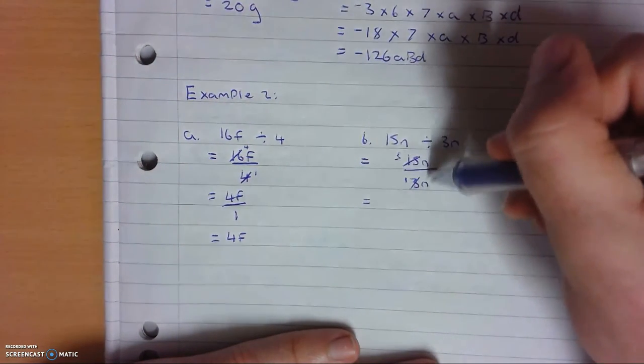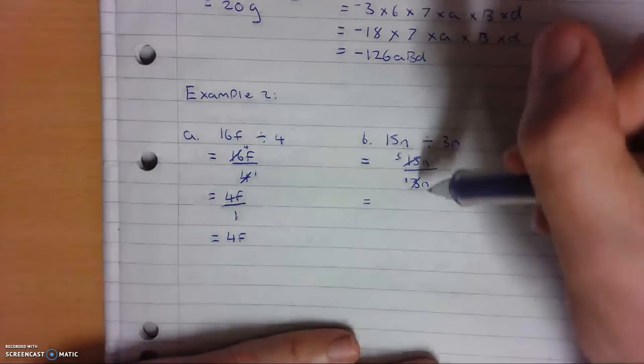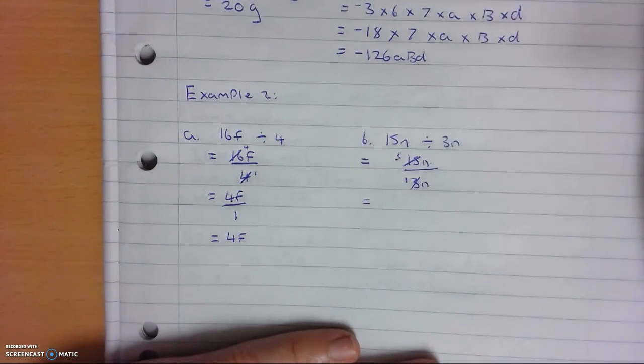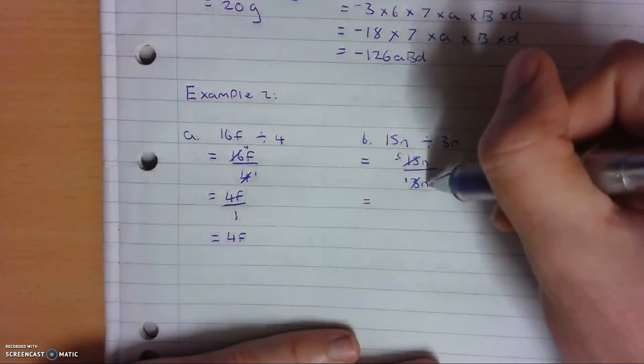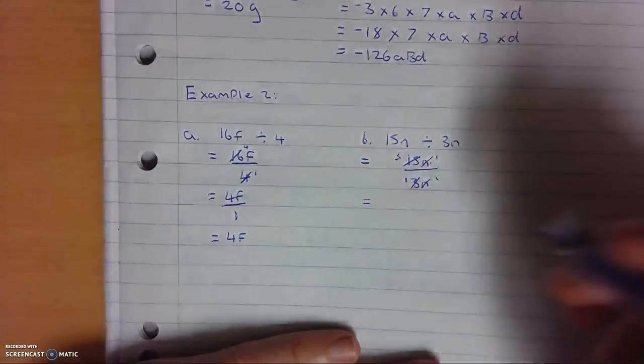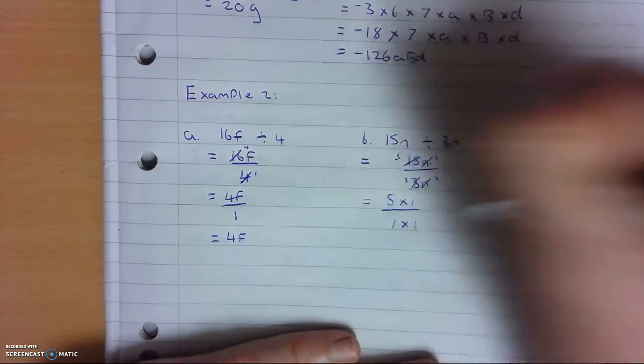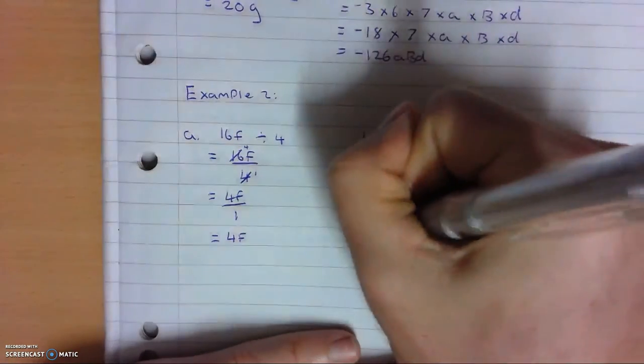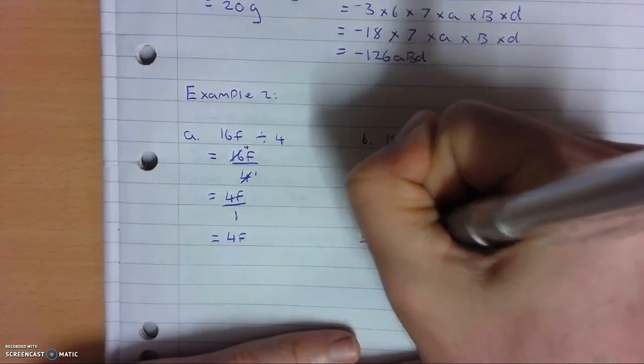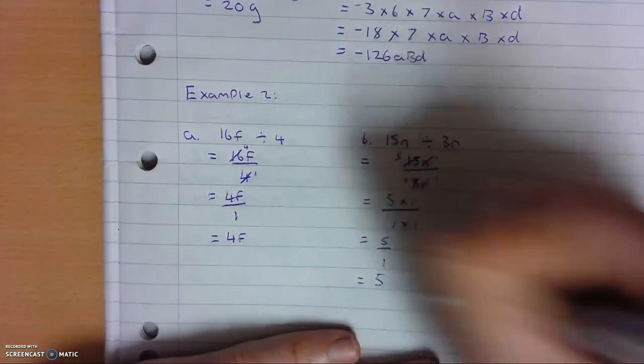Now I can also cancel out my n's. So the highest factor that will fit into n and n evenly is n. So how many times does n go into n once? How many times does n go into n once? So this can be written as 5 times 1 over 1 times 1. 5 times 1 means it's 5 over 1. And 5 over 1 is just 5.